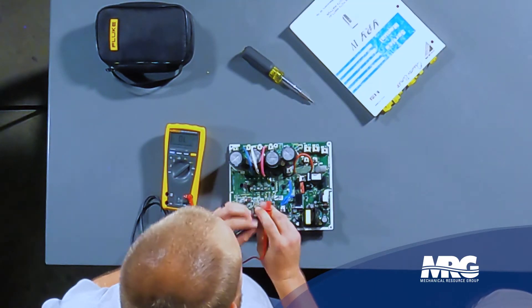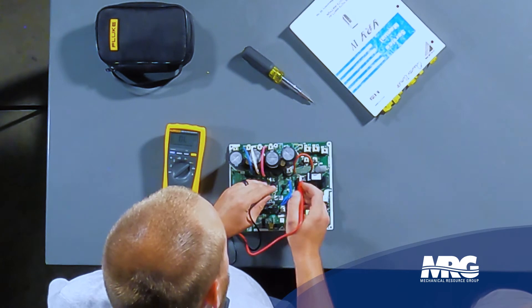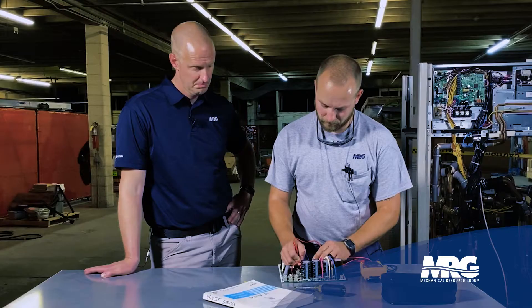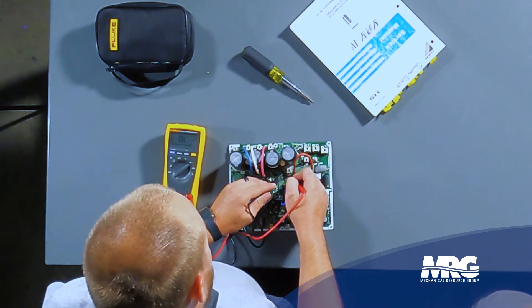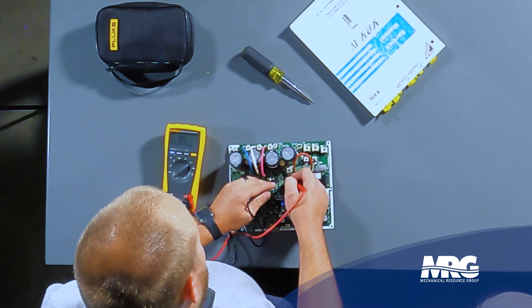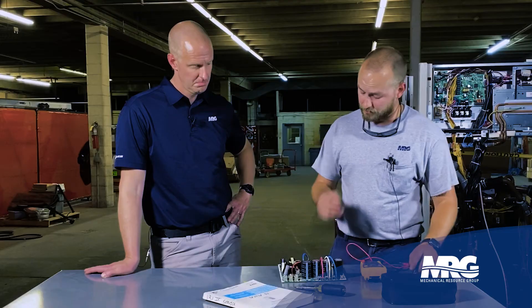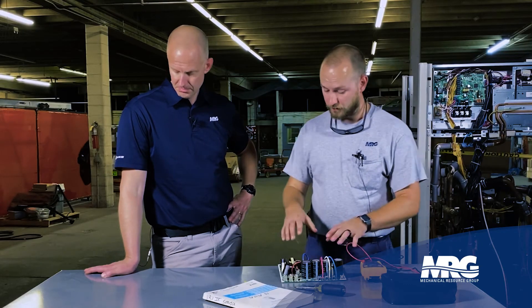So now we're going to swap our terminals around again. We're going to use our black meter lead on negative, red meter lead on terminal one, we have OL. Red meter lead on terminal two, OL. Then red meter lead on our third terminal, we have OL again. So by judging this test here, the diode bridge on this particular inverter board is in good shape. We took this out of a functional unit just for video's sake, but that's exactly what we're looking for. This is a good functional inverter board.